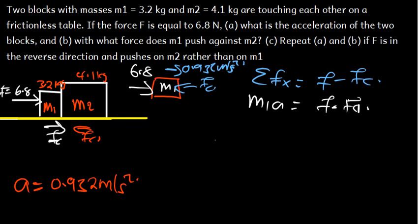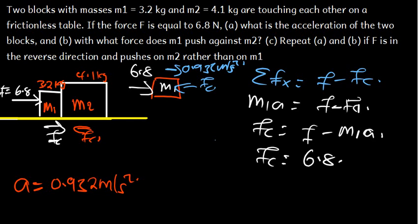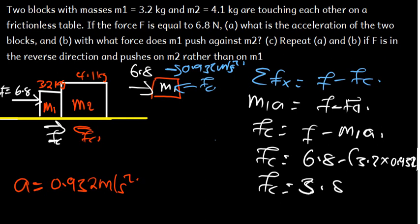The contact force is: Fc = 6.8 − (3.2 × 0.932) = 6.8 − 2.9824, giving us approximately 3.82 newtons. This is the force that M1 exerts on M2.